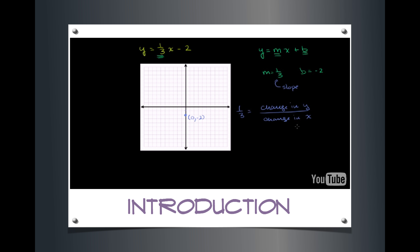Another way to think about it: if x changes by 3, then y will change by 1. So we know that this point is on the graph — that's the y-intercept. The slope tells us that if x changes by 3, going 3 to the right — 1, 2, 3 — y will change by 1. So this must also be a point on the graph.